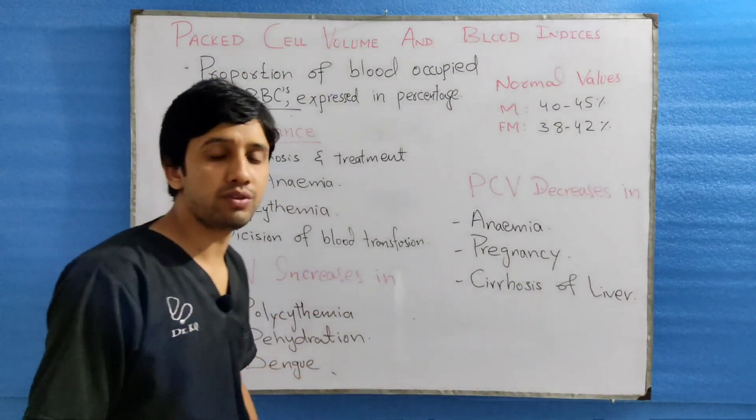When MCHC is decreased, the cells are hypochromic. In pernicious anemia and megaloblastic anemia, the cells are macrocytic and normochromic or hypochromic, while in iron deficiency anemia, the cells are microcytic and hypochromic. The last index is the color index, which is the ratio between the percentage of hemoglobin and the percentage of RBCs in the blood.